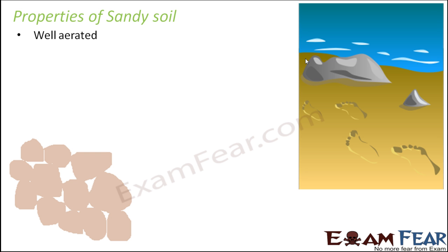So this is an example of the arrangement of sandy soil. Inside sandy soil, these are the particles which are big enough. And since the particles are big enough, the spaces between the particles are also big enough. These spaces can hold air, so air will be present in these spaces. That is why this type of soil is well aerated — sufficient amount of air is present in sandy soil.